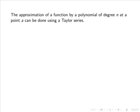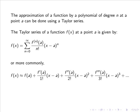The approximation of a function by a polynomial of degree n at a point a can be done using a Taylor series. The Taylor series of a function f(x) at a point a is given by the summation from n equals 0 to infinity of f to the nth derivative at a over n factorial times (x minus a) to the power of n.